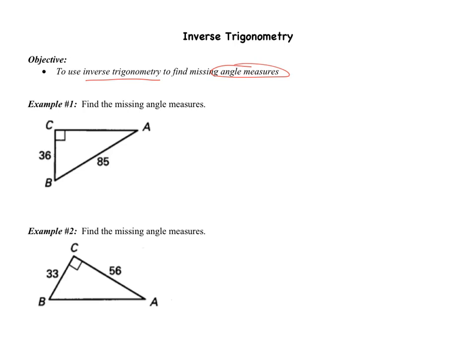So let's look right away at example number one. It says find the missing angle measures. We know angle C — angle C is 90 — so we're going to have to find angles A and B. I want to start with angle A. The first step any time you do a problem like this is you need to identify which side do you have: do you have the opposite, do you have the adjacent, or do you have the hypotenuse?